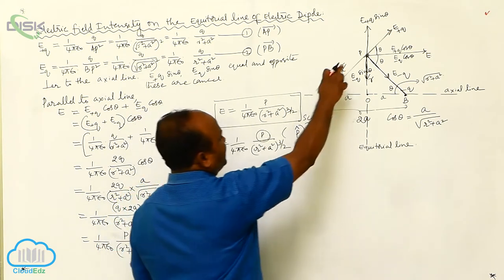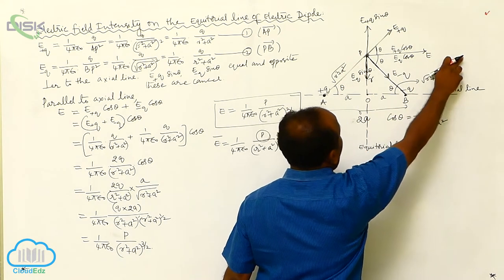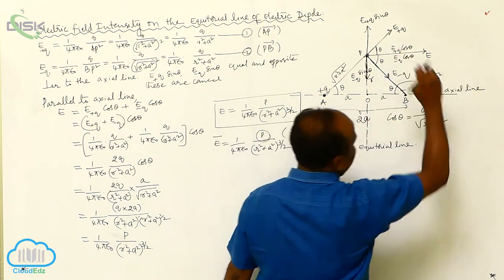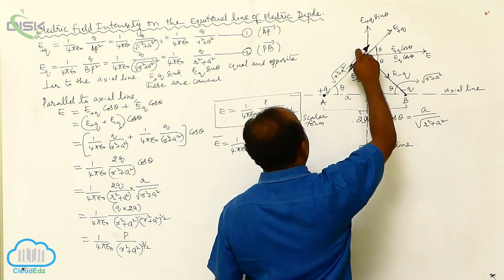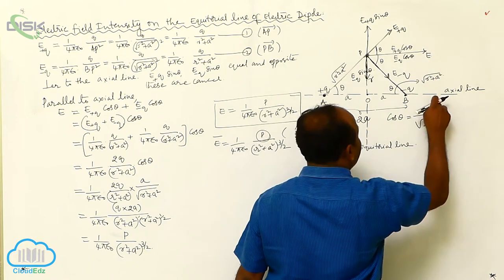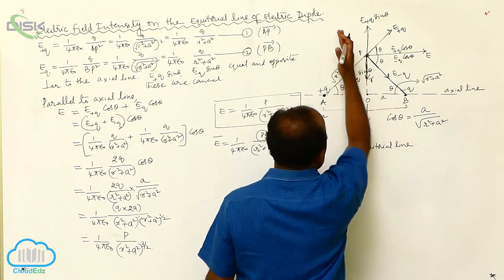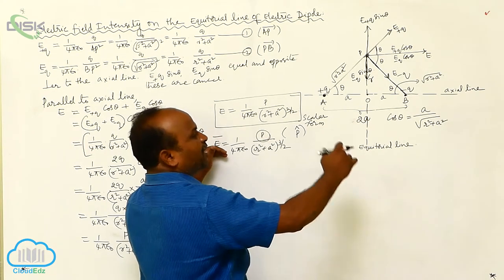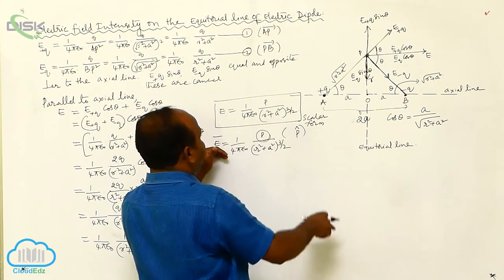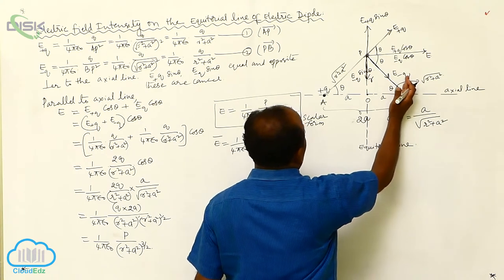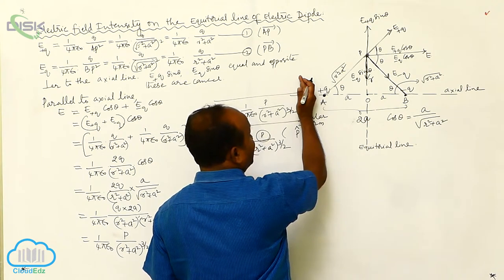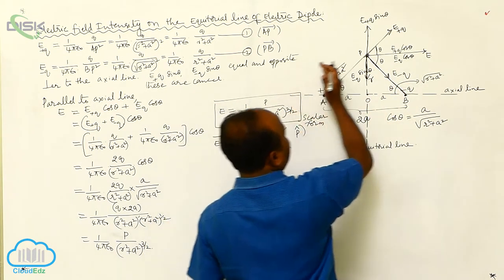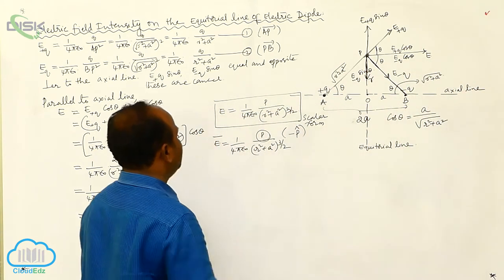The resultant electric field intensity is directed from positive charge to negative charge, parallel to the axial line. The electric field intensity at point P is parallel to the axial line and from positive charge to negative charge. To write this in vector form, we multiply by the unit vector of dipole moment, which goes from minus q to plus q. To match the direction of the electric field intensity, we use minus p-cap.